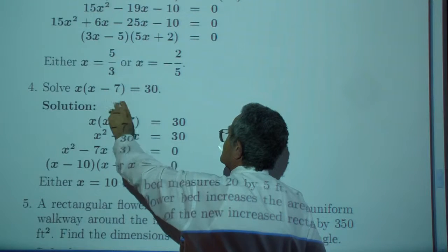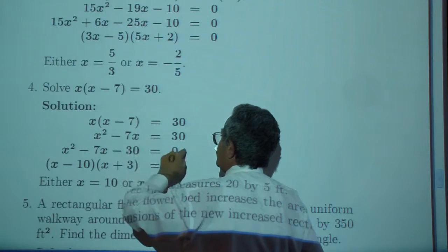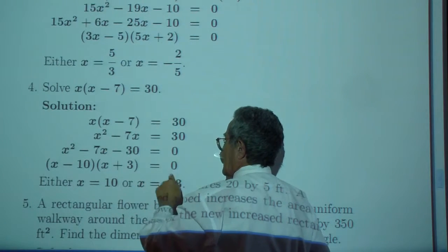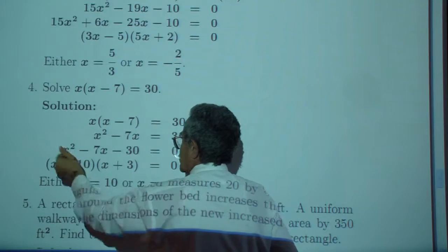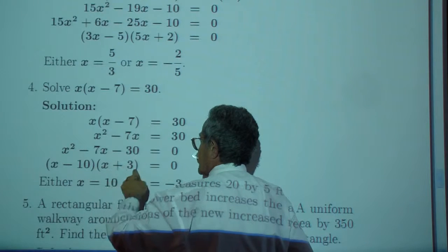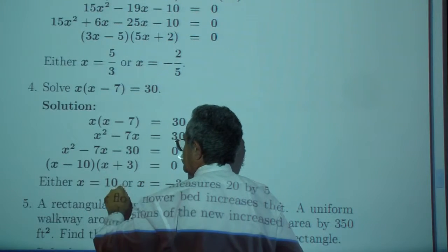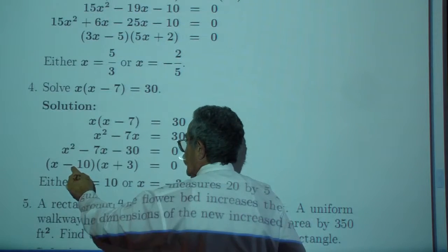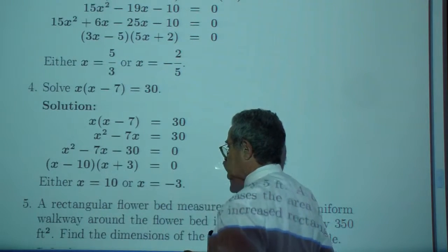Solve this equation. Distribute on the left, subtract 30 from the right. Greatest common factor is one. The magic numbers are ten and three. So X minus ten times X plus three is zero. Either X is ten or X is negative three.